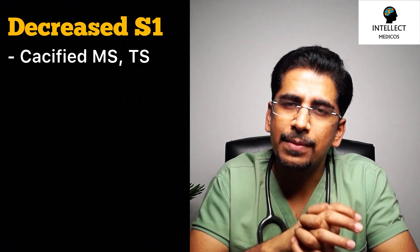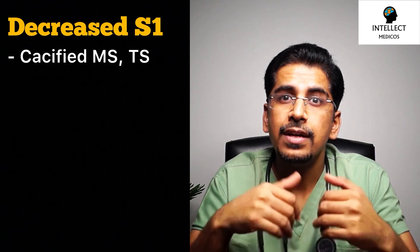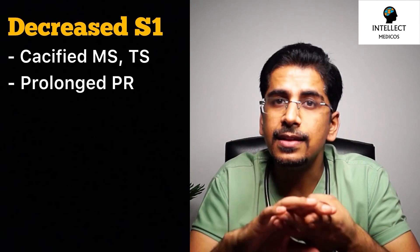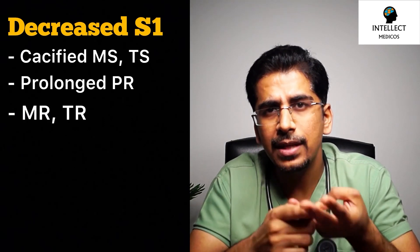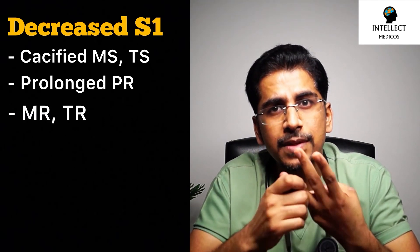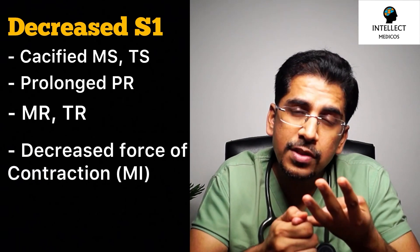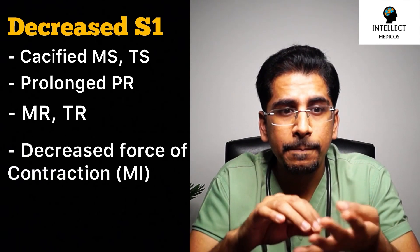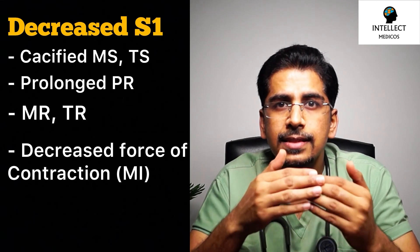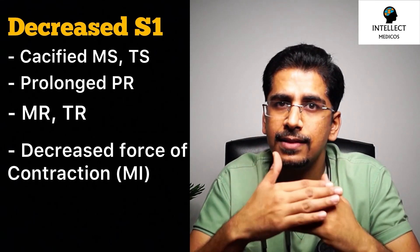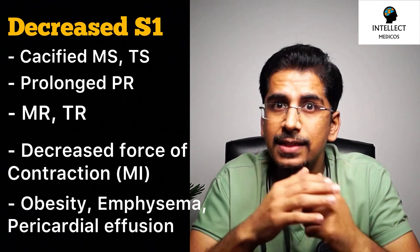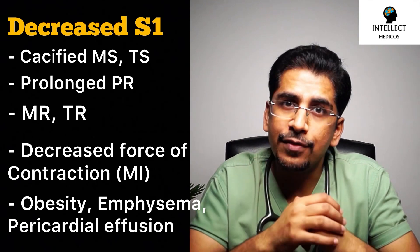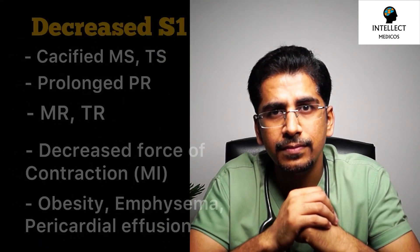Decreased or diminished S1 occurs in: increased calcification of the valves — mainly calcified mitral stenosis or tricuspid stenosis; prolonged PR interval; mitral regurgitation or tricuspid regurgitation; decreased force of contraction as in myocardial infarction; and fifth, when the distance between the heart and skin is increased — as in obesity, emphysema, pericardial effusion, or pleural effusion.